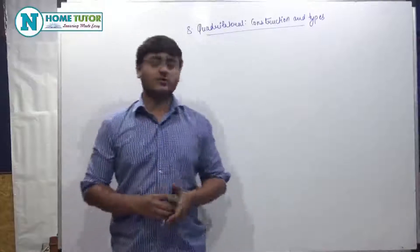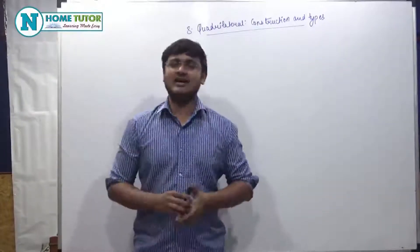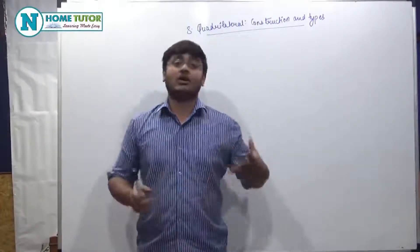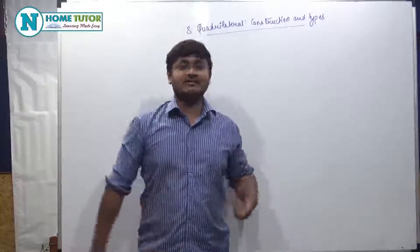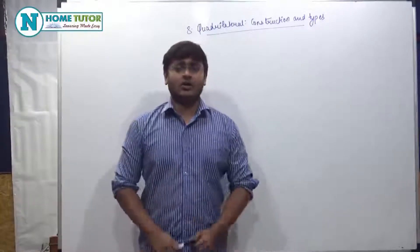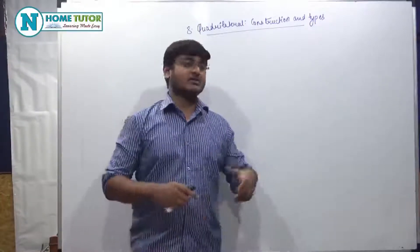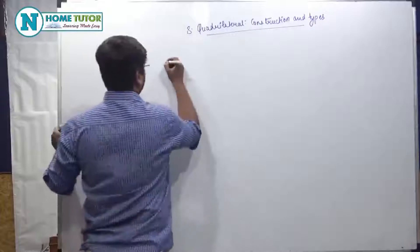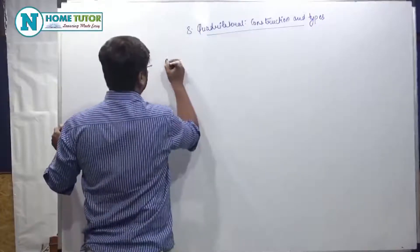Now, there are some other kinds of quadrilaterals as well, like a rectangle, square, and rhombus. Now, what are the properties of rectangles if we talk about them?